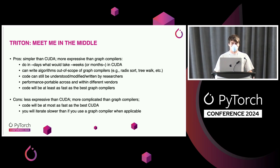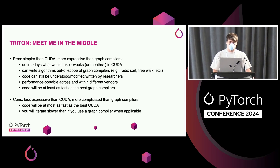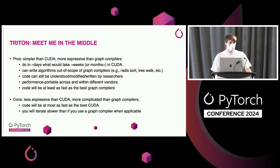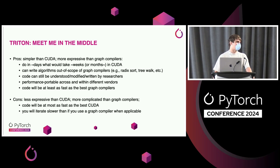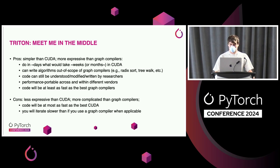We also want Triton to be performance portable, a key characteristic of graph compilers. Because it's lower level, if you spend enough time on your custom operators and kernels, you'll at least get the same performance as a graph compiler. The flip side is it's way less expressive than CUDA and more complicated than graph compilers — your code will be at most as fast as the best CUDA, and if you spend enough time on CUDA it will be faster. It also means you'll iterate slower than with a graph compiler. No free lunch here.